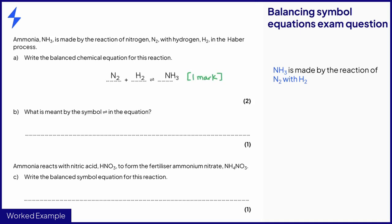The second mark is for balancing the equation. The unbalanced equation shows that one nitrogen molecule reacts with one hydrogen molecule to form one ammonia molecule. To balance the nitrogen atoms on the left-hand side, we must make two ammonia molecules. This means that we now have six hydrogen atoms on the right-hand side, which can be made using three hydrogen molecules.